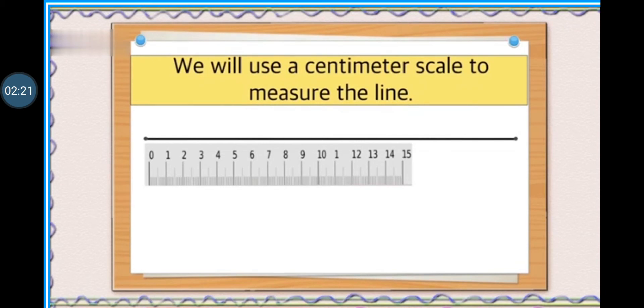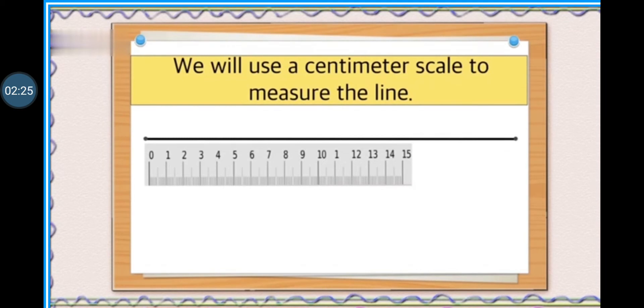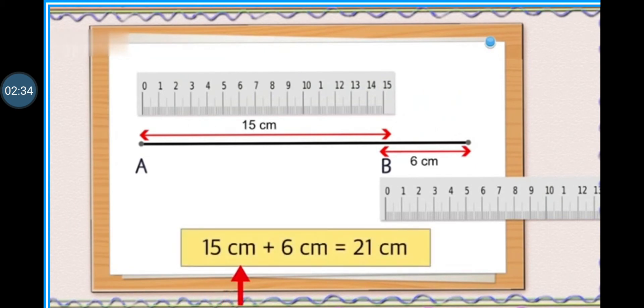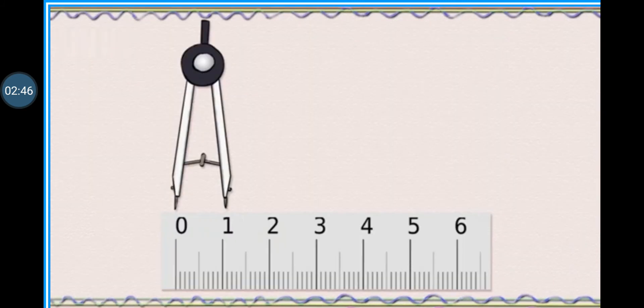So don't worry my dear students we can measure the line by parts. We can mark a point on 15 centimeter and place our ruler again from 15 centimeter onwards. So 15 centimeter plus 6 centimeter is equals to 21 centimeter. It means this line is 21 centimeter long.